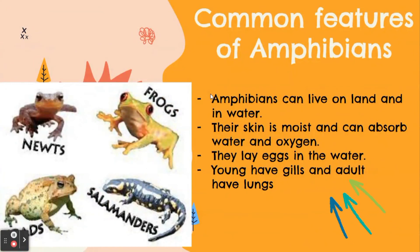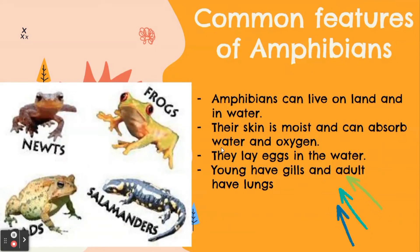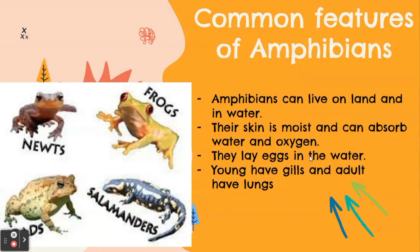Next, common features of amphibians. Amphibians can live on land and in water. Their skin is moist and can absorb water and oxygen. They lay eggs in the water. Young have gills and adults have lungs.